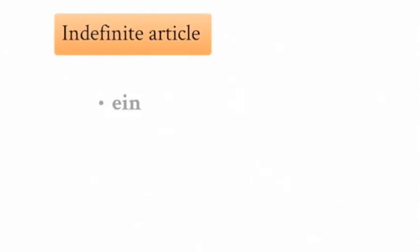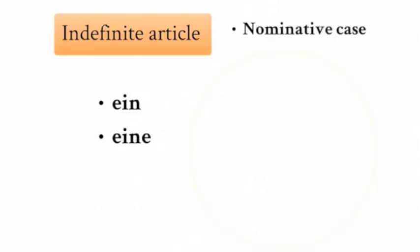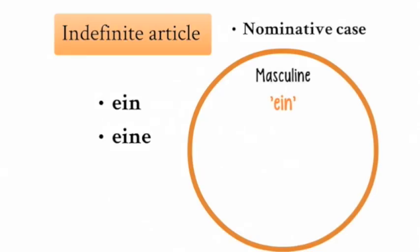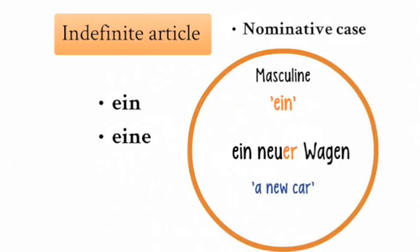Now let's have a look at the indefinite article Ein and Eine in the nominative case. In the case of the masculine form Ein, we have the example of Ein neuer Wagen, which is 'a new car.' Here the adjective neu changes the ending to neuer: Ein neuer Wagen.